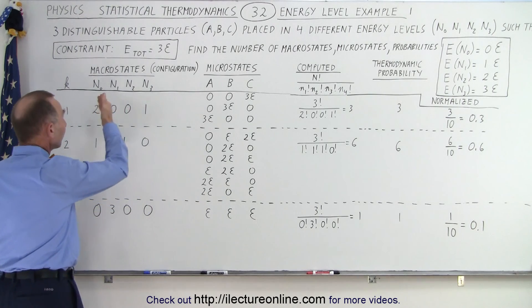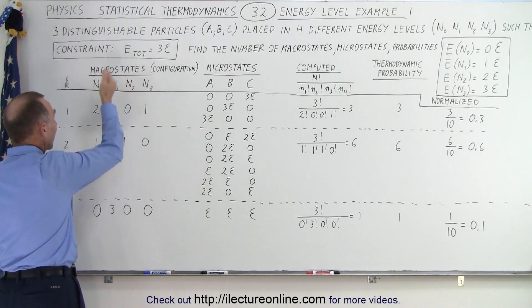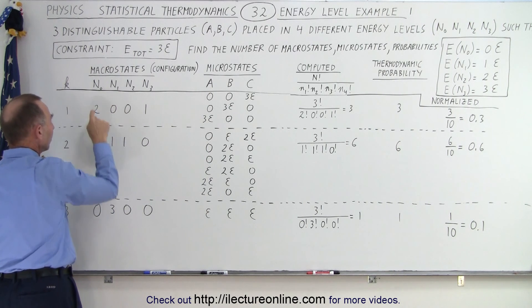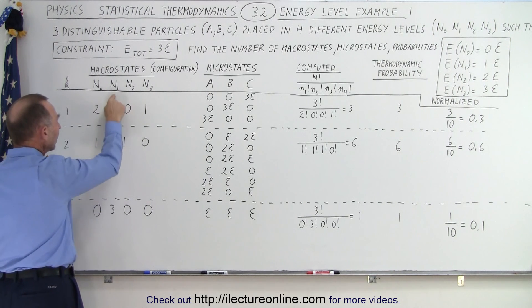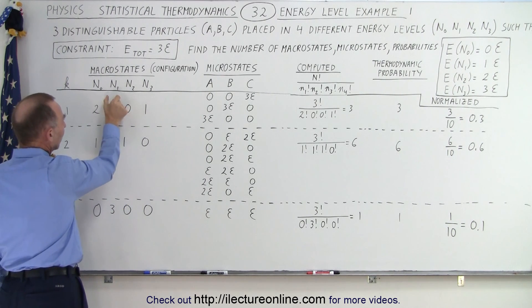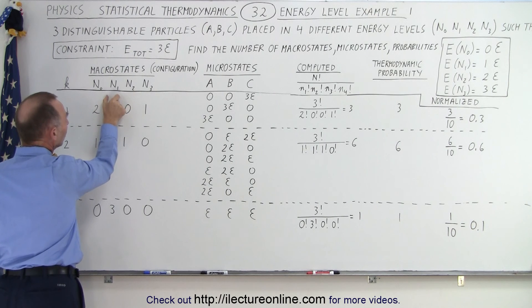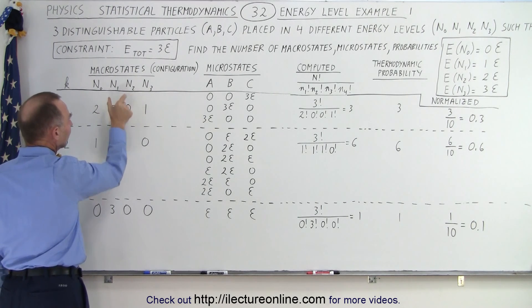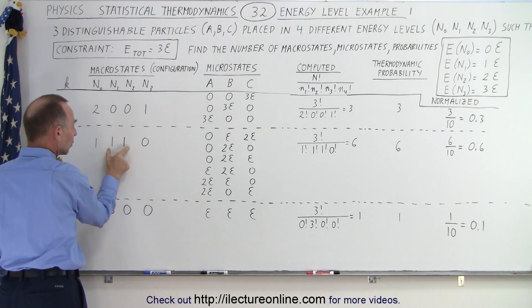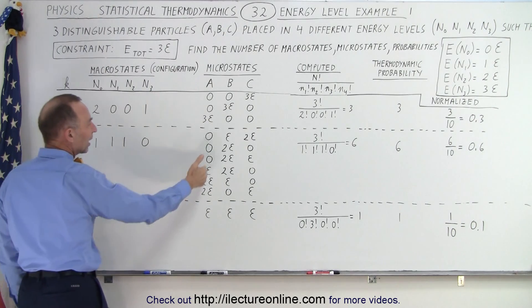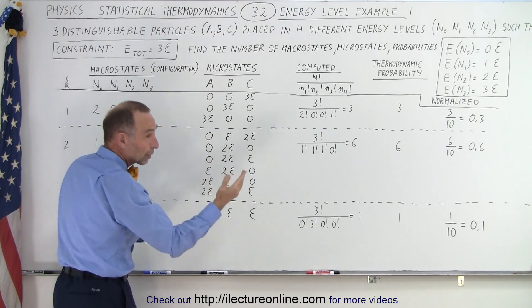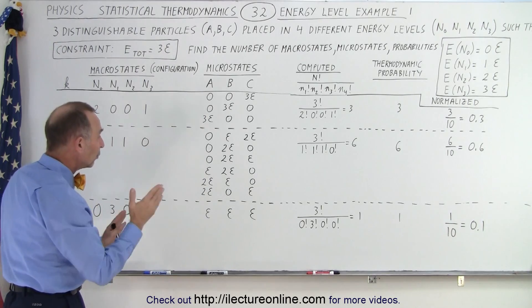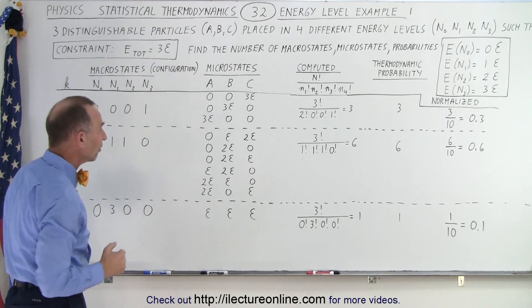The next configuration is if we have one particle in the zero level, one in the one level, and one in the two level. Remember that N1 has one quantum energy and N2 has two quantum energies, so combined that gives us three quantum energies. We'll find out that there are six different ways in which we can take those three particles and rearrange them into these different levels.